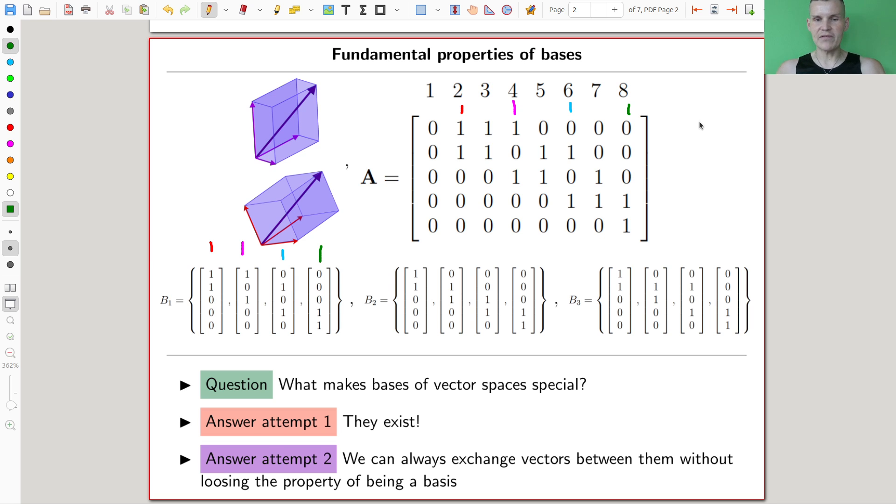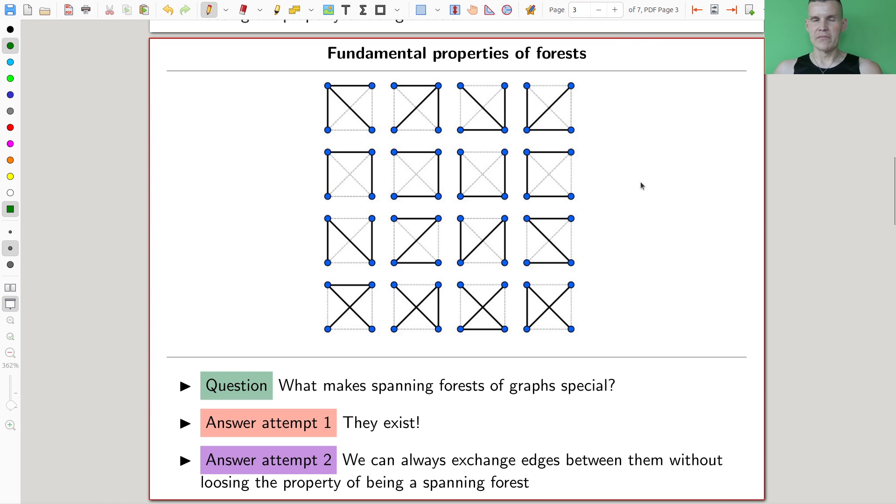And you can always have this fun exchange property. So if you have one vector, you can just exchange it with another one without losing the properties of being a basis. You can exchange them between them. And that's this idea of the base change. This idea in linear algebra that basis has always the same number of vectors. And you can kind of, if you want to take out one, you can put in another without ruining the property of being a basis, if you're a little bit careful that they are still linearly independent.